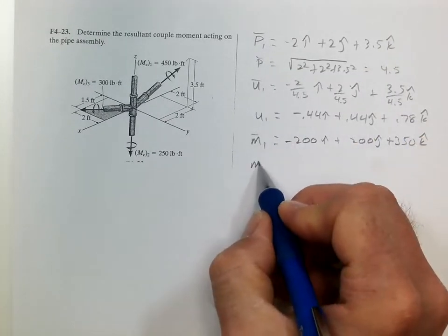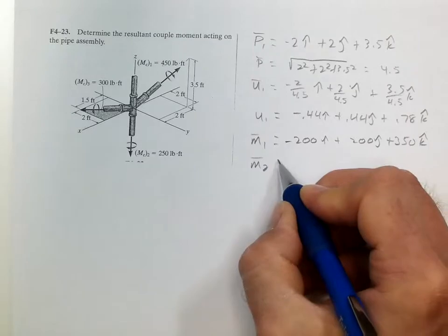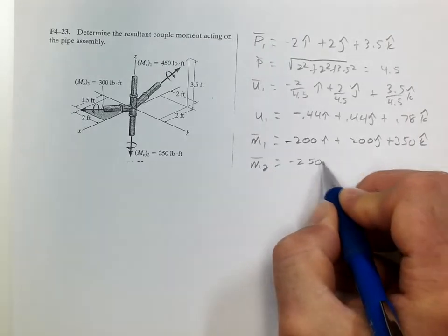So moment 2 is all just 250, negative 250 in the k direction.